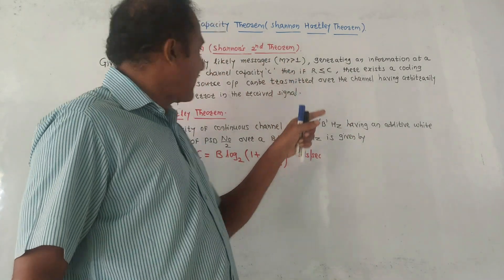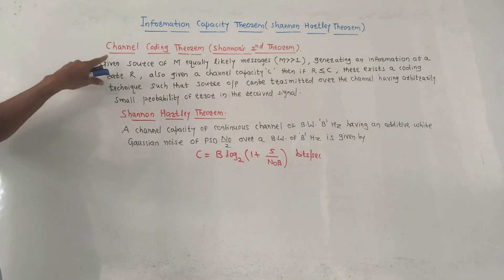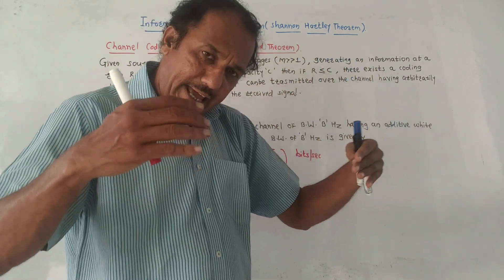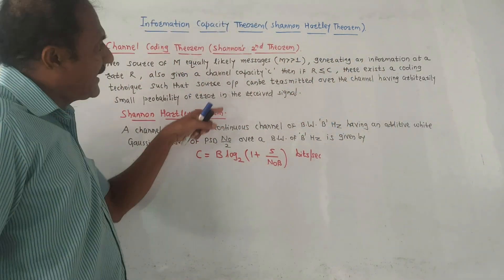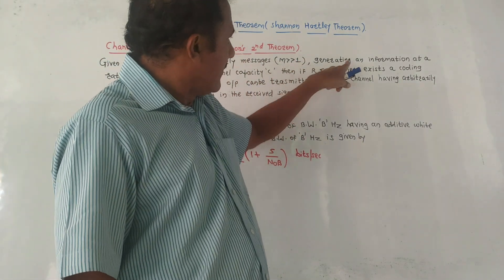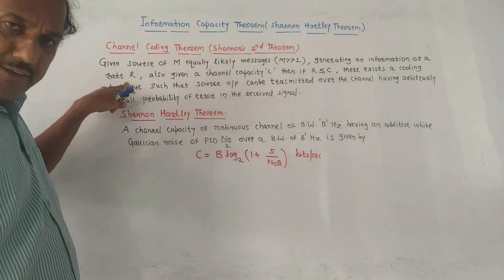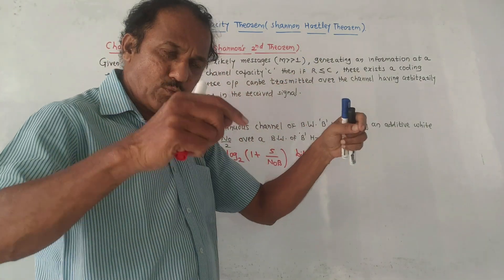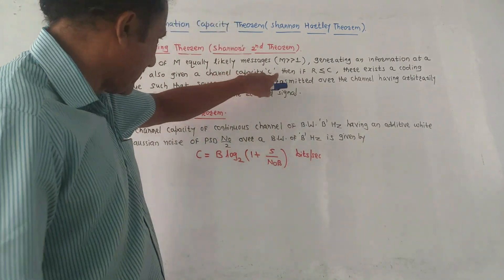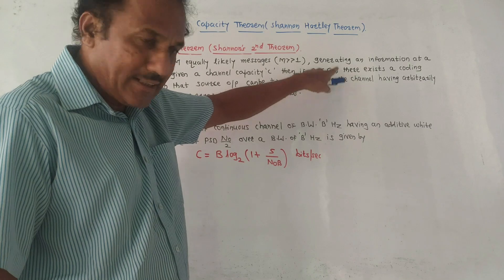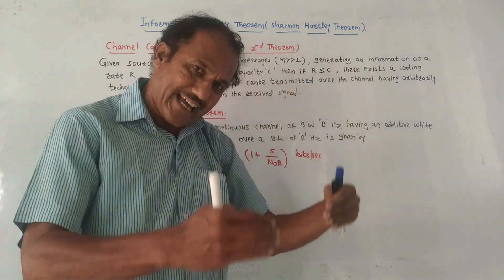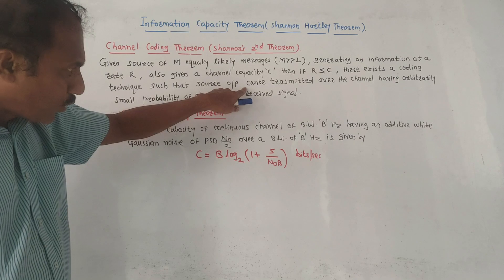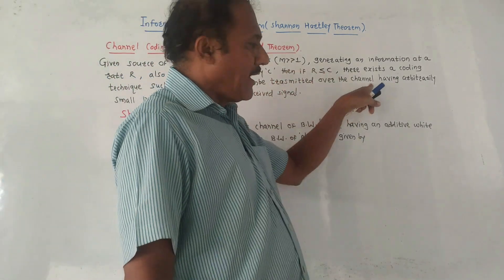The statement of the channel coding theorem: given a source of M equally likely messages — the source generates M messages which are equally likely and the number of messages is very much greater than one — generating information at a rate R. Also given a channel with channel capacity C. If R is less than or equal to C, that is the information rate should be less than or equal to the channel capacity, then there exists a coding technique such that the source output can be transmitted over the channel with arbitrarily small probability of error in the received signal.